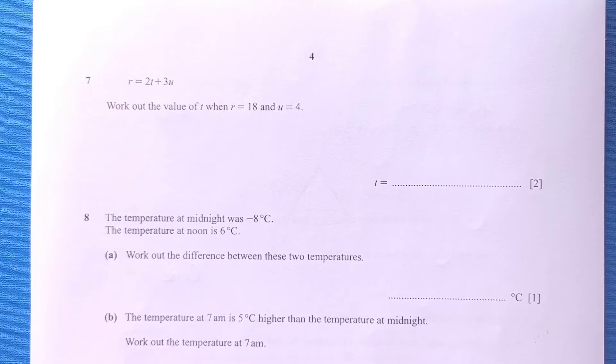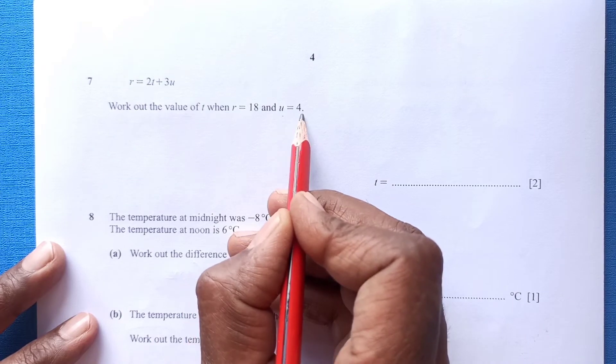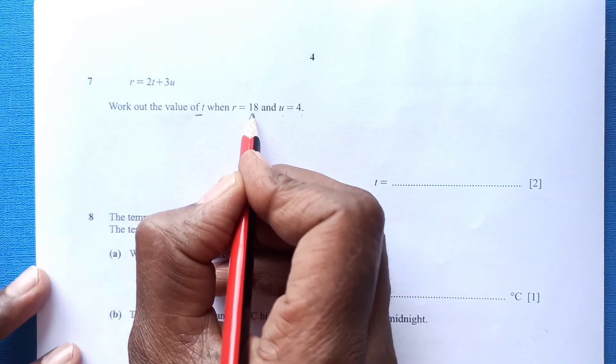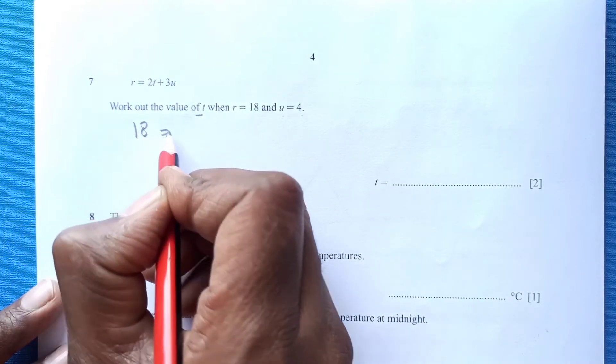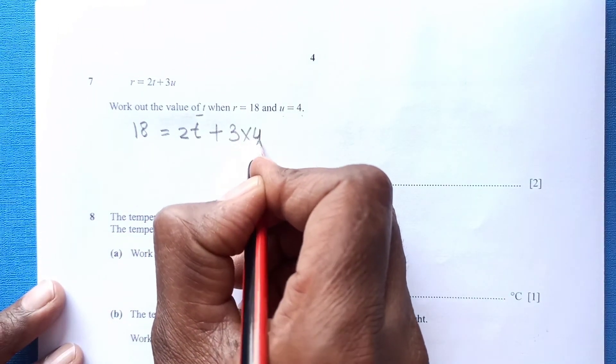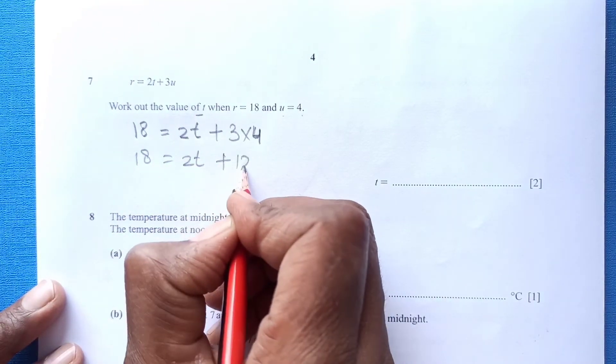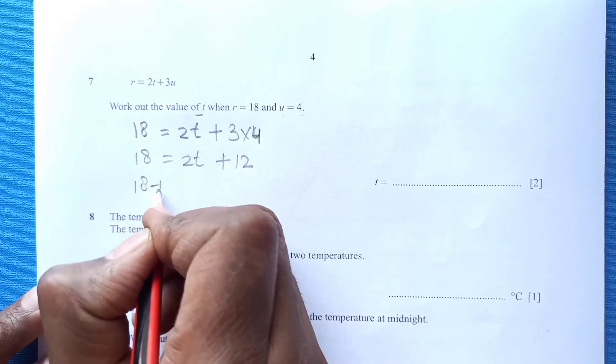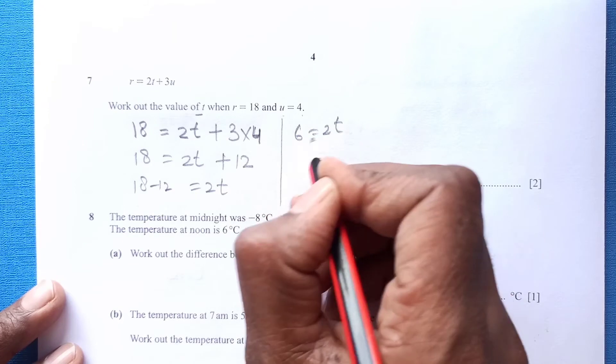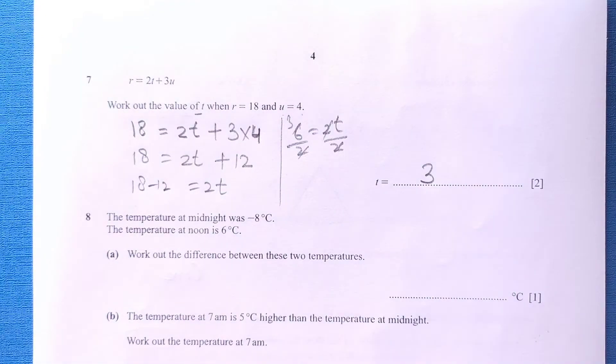Number 7: You are given R equals 2T plus 3U. Work out the value when R is 18 and U is 4. We need to find out the value of T. Just replace, plug in the values. R is 18, 2 times T remain as it is plus 3 times U is 4. 18 equals 2T plus 12. Then 18 minus 12 equals 2T. This is 6 equals 2T divided by 2. T is equal to 3.